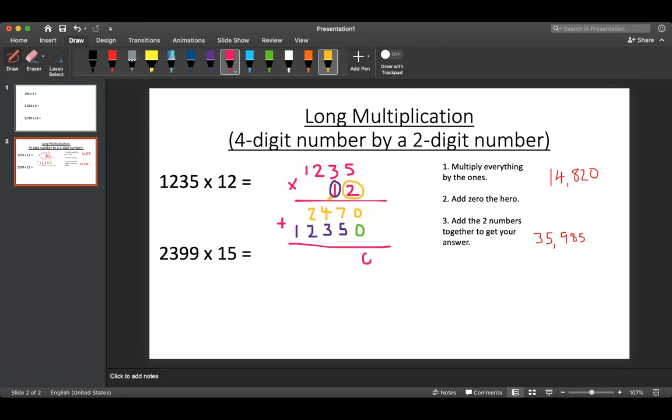So 0 add 0 is 0, 7 add 5 is 12, don't forget to put your 1 here, 4 add 3 is 7, add 1 is 8, 2 add 2 is 4, 0 add 1 is 1, and then go back 3, 1, 2, 3, to then indicate your tens of thousands. So we've got the answer 14,820.